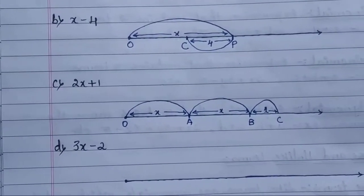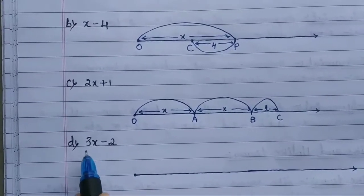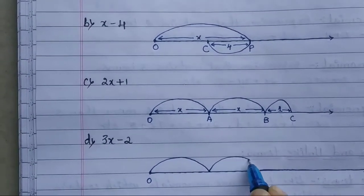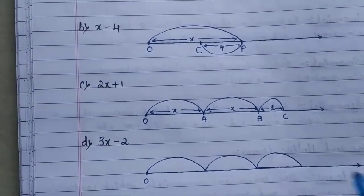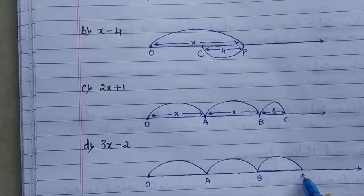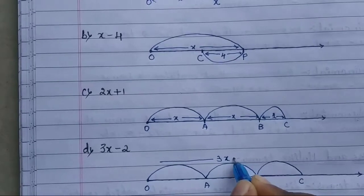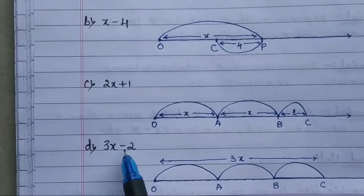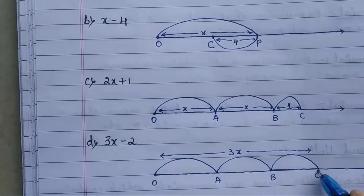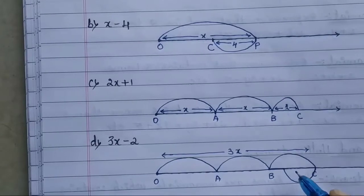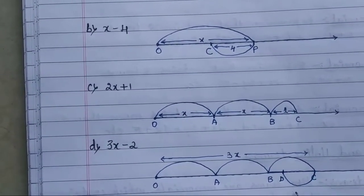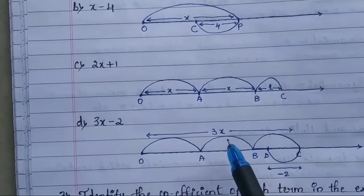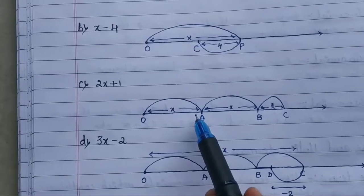For 3x - 2: starting from 0, we mark x three times — points A, B, and C — giving us 3x. Since it is -2, from point C we move back 2 units to the left to point D. The distance from 0 to D represents 3x - 2 on the number line.